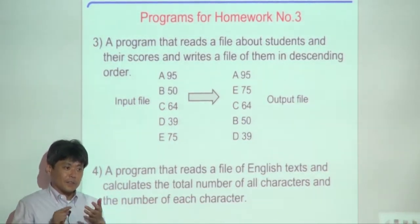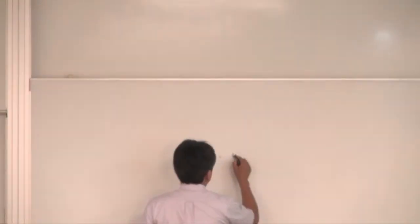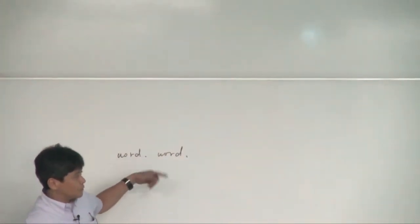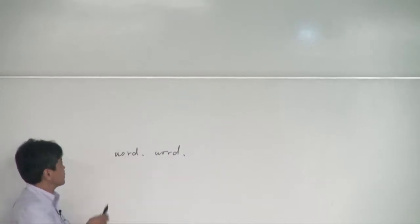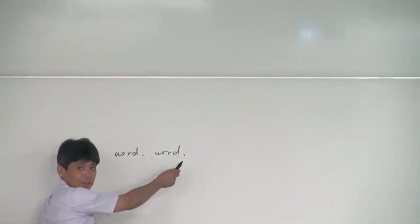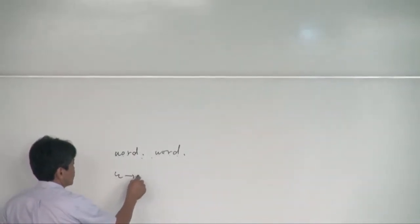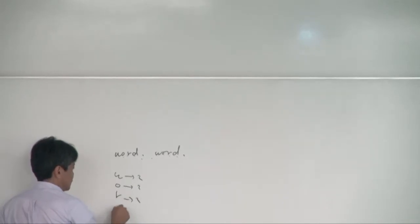For example, A appears this many times, B appears this many times, C appears this many times, and so on. In this example, the total number of characters is 10. And the count of each character: W is 2, O is 2, R is 2, D is 2.